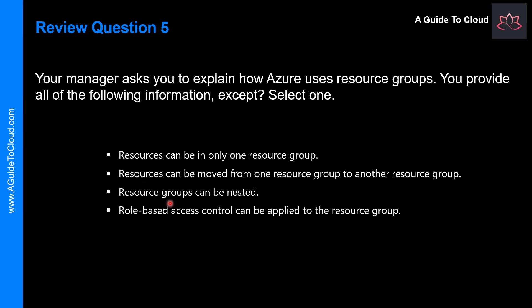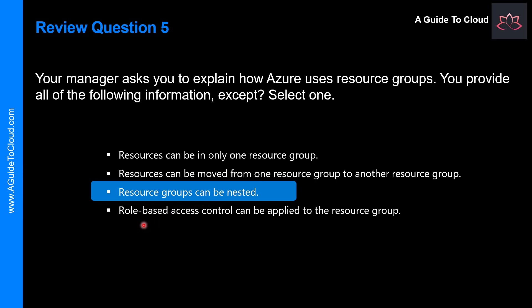The next option is resource groups can be nested — that is not possible. Resource groups cannot be nested, so that is the wrong option and therefore the correct answer for this question. The last option: role-based access control can be applied to the resource group — absolutely possible. You can create granular RBAC permissions to a resource group or to individual resources as well.